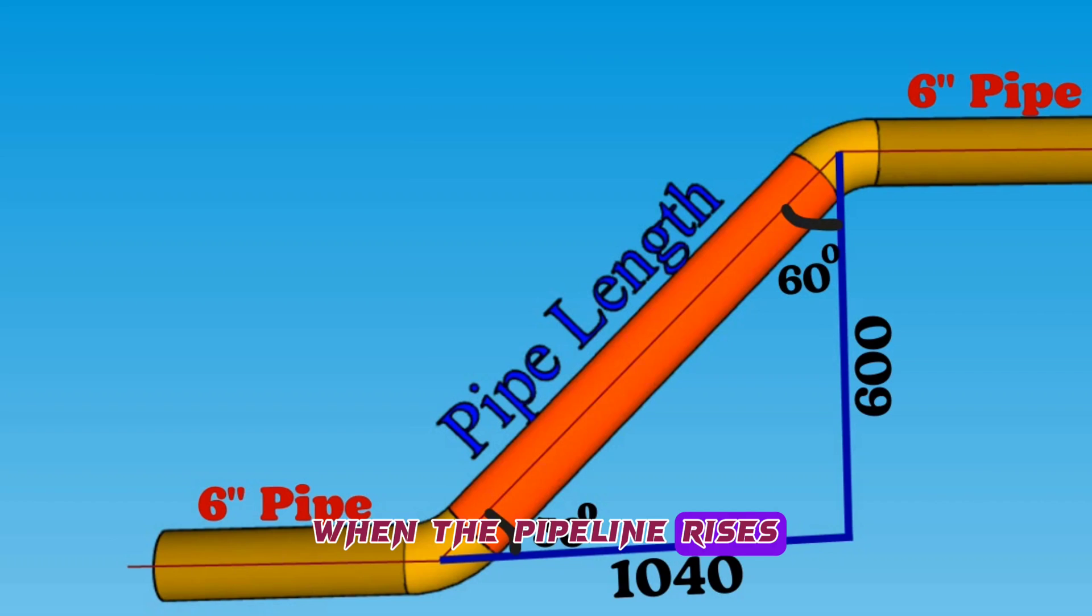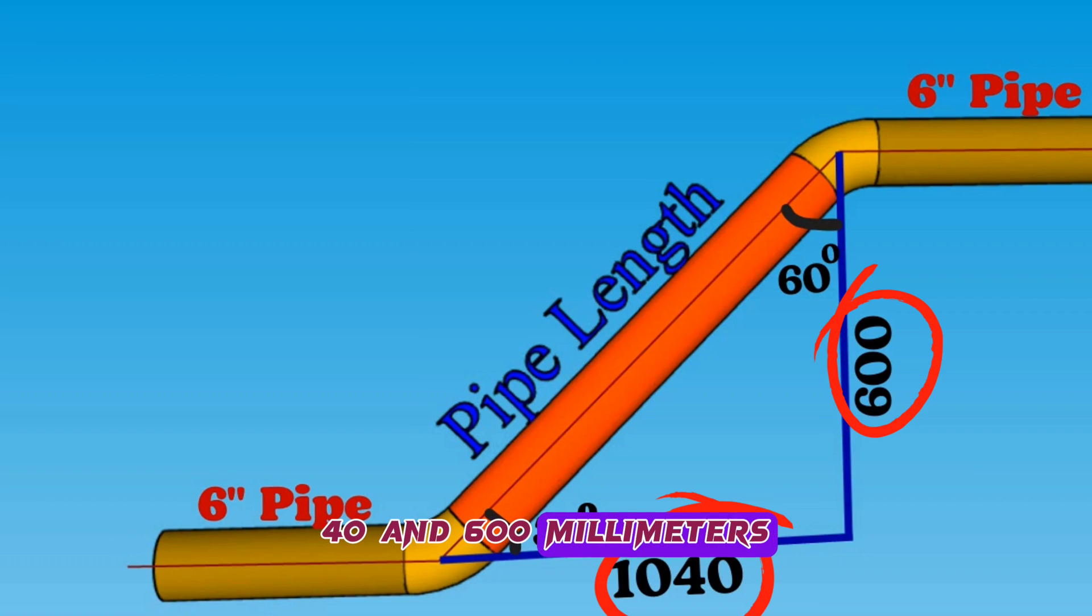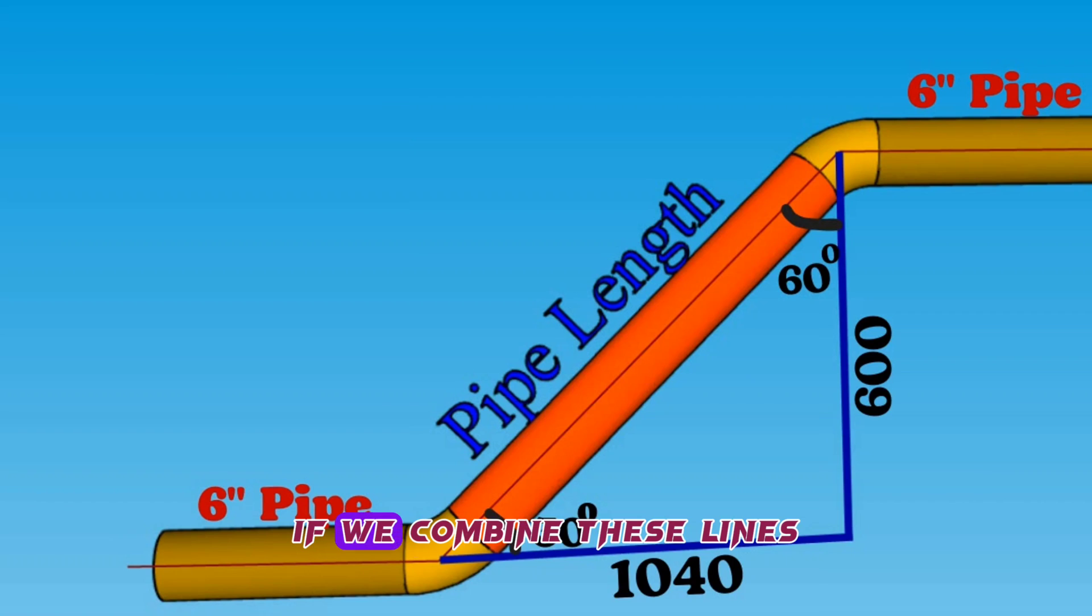When the pipeline rises at a 30-degree angle, it forms lines with a length of 1040 and 600 millimeters passing through the centers of the elbows. If we combine these lines, a right-angle triangle will be created.